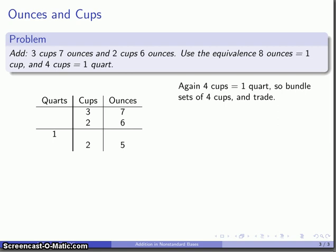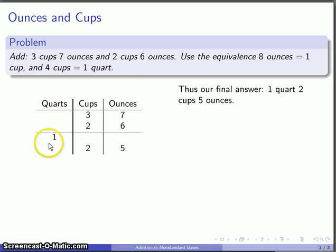And now, I have my answer. I can't convert any more ounces to cups, I don't have enough. I can't convert any more cups to quarts, again not enough. So, I'm done with the simplification. And this allows me to state my final answer: 1 quart, 2 cups, and 5 ounces. All right.